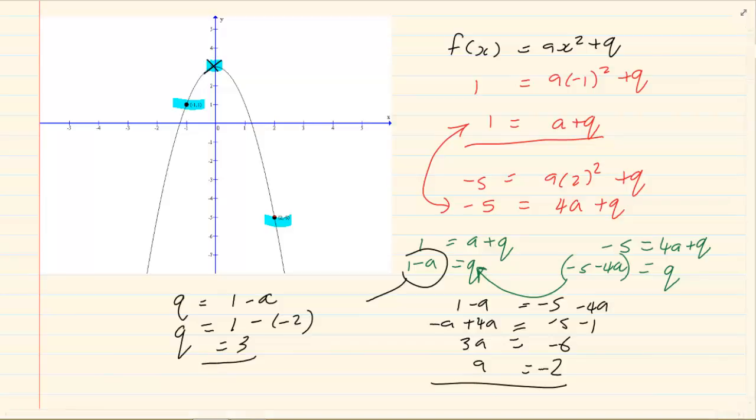Then rewrite your equation. y or f of x is equal to minus 2x squared plus 3. Thank you for watching.